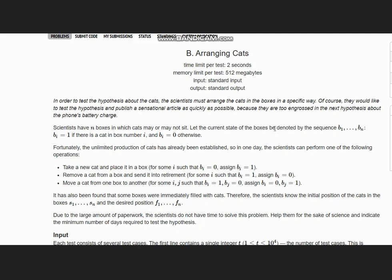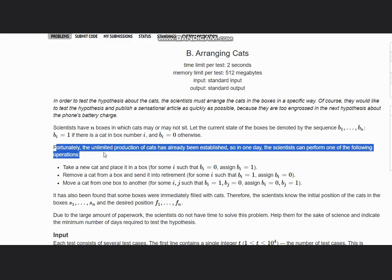Scientists have n boxes in which cats may or may not sit. Let the current state of boxes be denoted by sequence b1 to bn. bi equals 1 if there is a cat in box number i, and bi equals 0 otherwise. Fortunately, the unlimited production of cats has already been established.